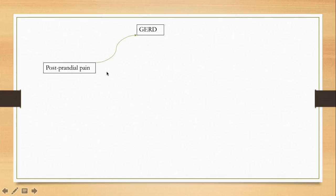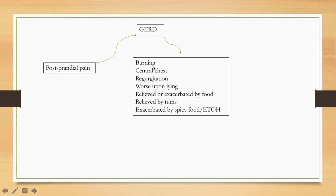Next are gastrointestinal causes of chest pain. First is GERD, or gastroesophageal reflux disease — a fairly common cause. It is usually postprandial chest pain, occurring after a big meal when the patient lies down. The pain is a burning sensation in the center of the chest, usually accompanied by regurgitation.